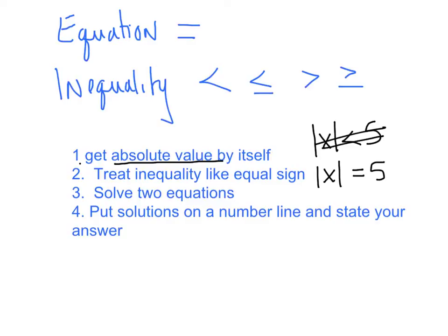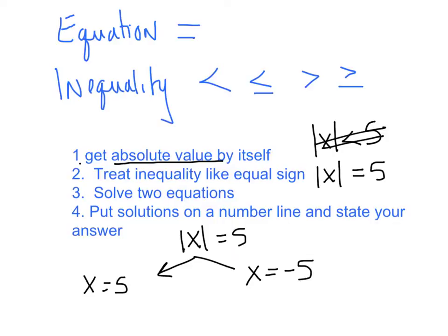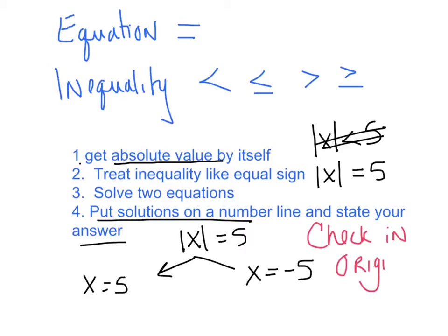Step three: solve the two equations. If I have the absolute value of x equals five, one equation is x equals five and the other is x equals negative five, just like we did yesterday. Step four: put your solutions on a number line and state your answer. And just remember to check in the original.